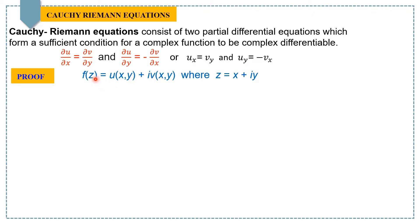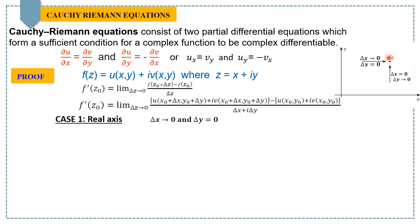Then the complex derivative of this function at a point z₀ can be defined as f'(z₀) = lim(Δz→0) [f(z₀ + Δz) - f(z₀)]/Δz, provided that this limit exists.